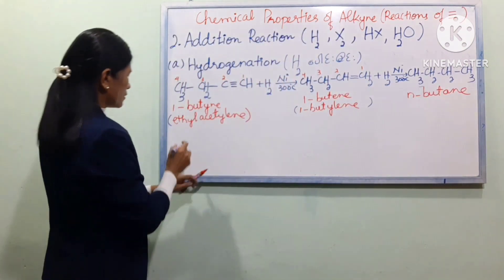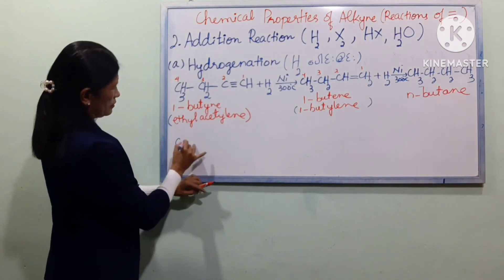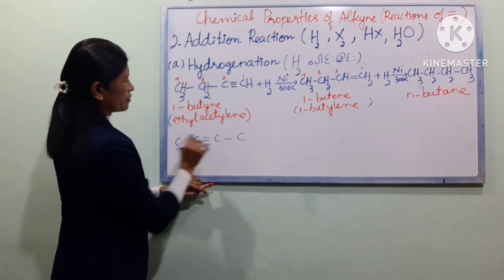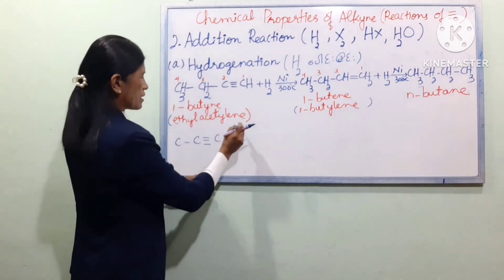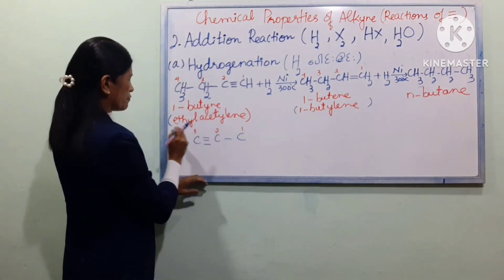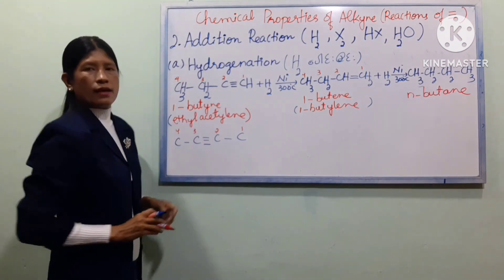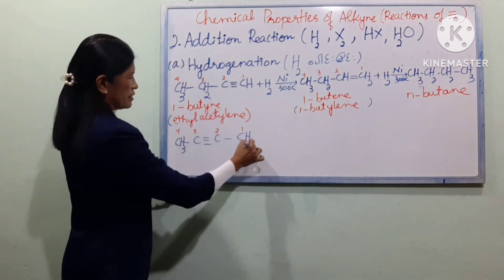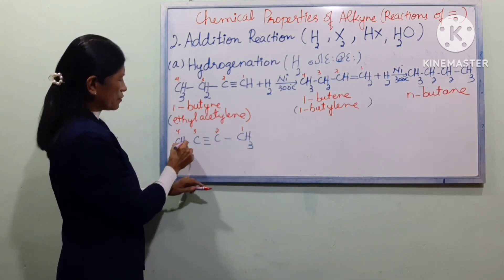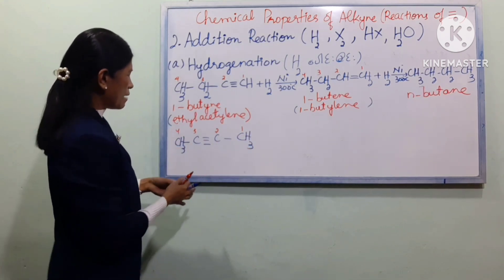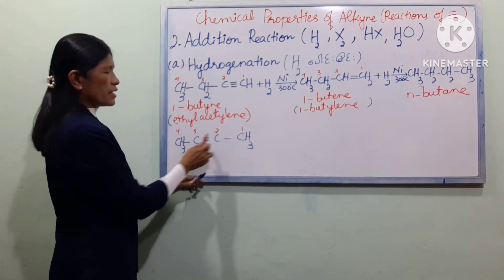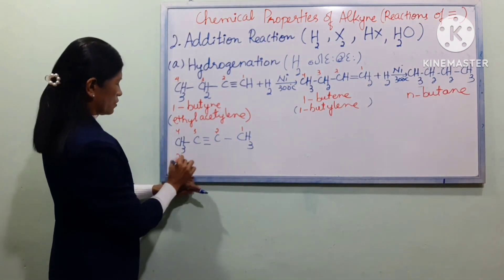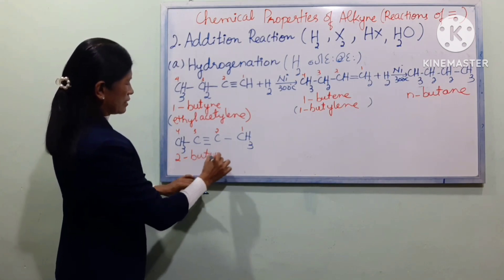Now, for naming: if we have a four-carbon chain with a triple bond, we number the carbons — one, two, three, four — and assign the triple bond the lowest locant. For example, with the triple bond at position 2, the compound is named 2-butyne.